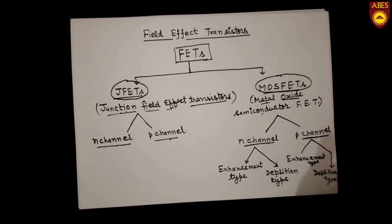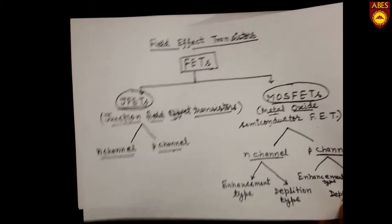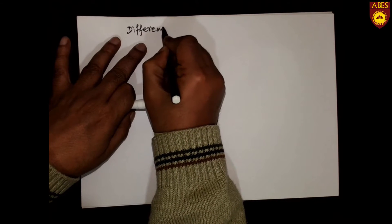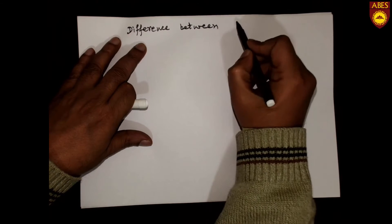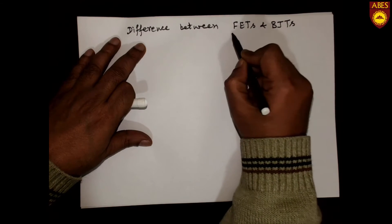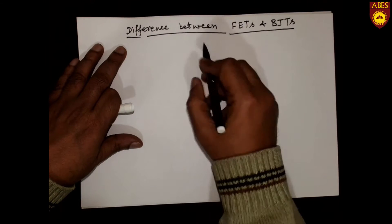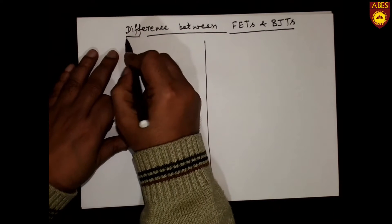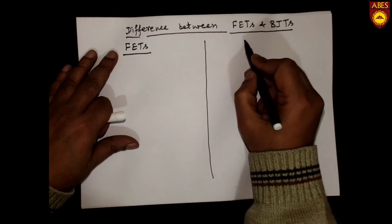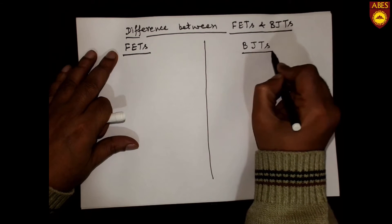So that is all about the classification of field effect transistors. Now we will talk about the differences between field effect transistors and bipolar junction transistors, which we have already studied. Let us make a table comparing FETs and BJTs.